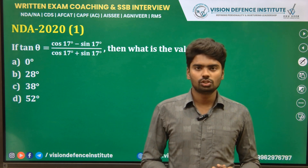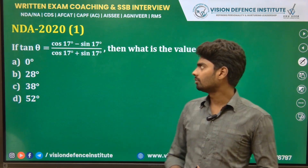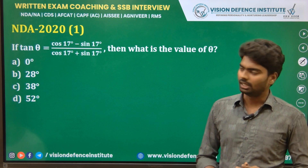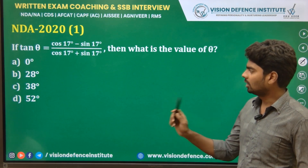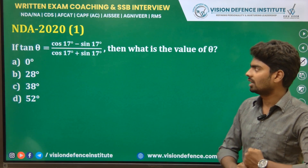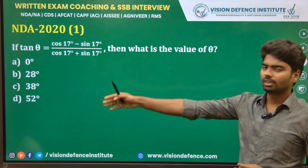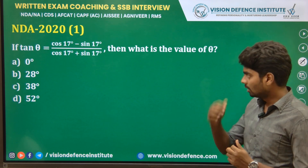Hello everyone, welcome to Vision Dimension Studio. Today we are going to solve a problem from the 2020 exam. We have: tan θ = (cos17° - sin17°) / (cos17° + sin17°).